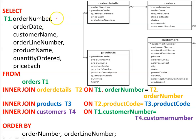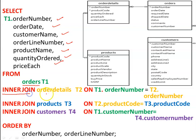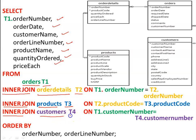In the SELECT clause we specify all the attributes required from all the different relations. In the FROM clause we specify the first table — orders — then inner join with the order details table, inner join with the products table, and inner join with the customers relation. We rename the orders table as T1, order details as T2, products as T3, and the customers table as T4.